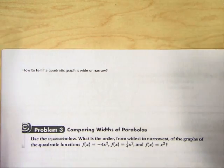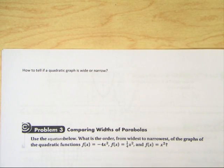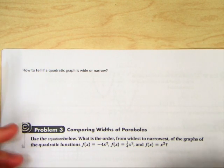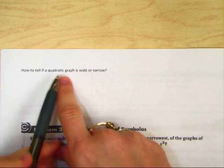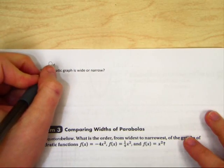In the next section of the notes, we're going to talk about the width of parabolas and then how you can make a parabola go up or down on a graph. First question is how can you tell if a quadratic graph is wide or narrow? Now you see how it says a quadratic graph? That's the same thing as a parabola.